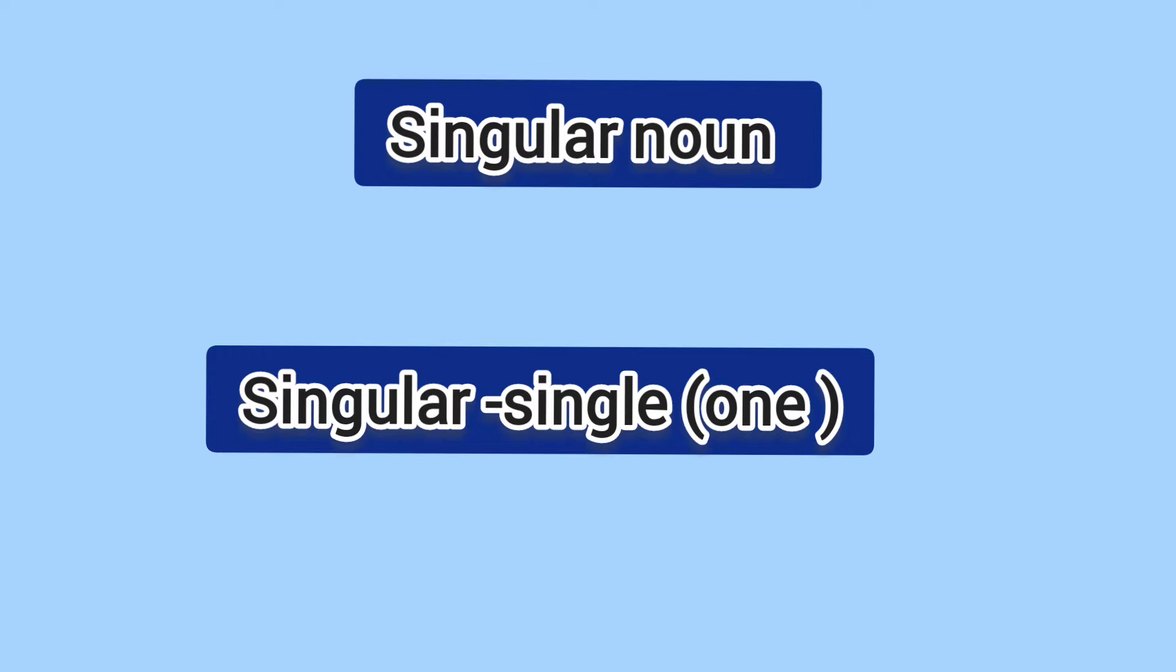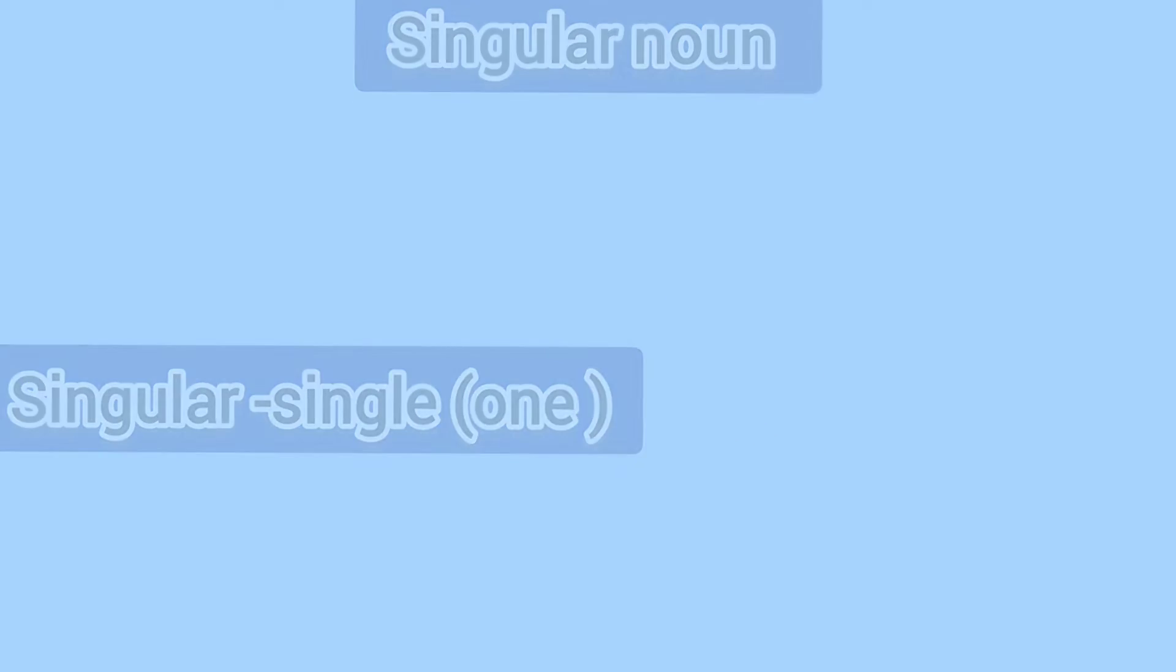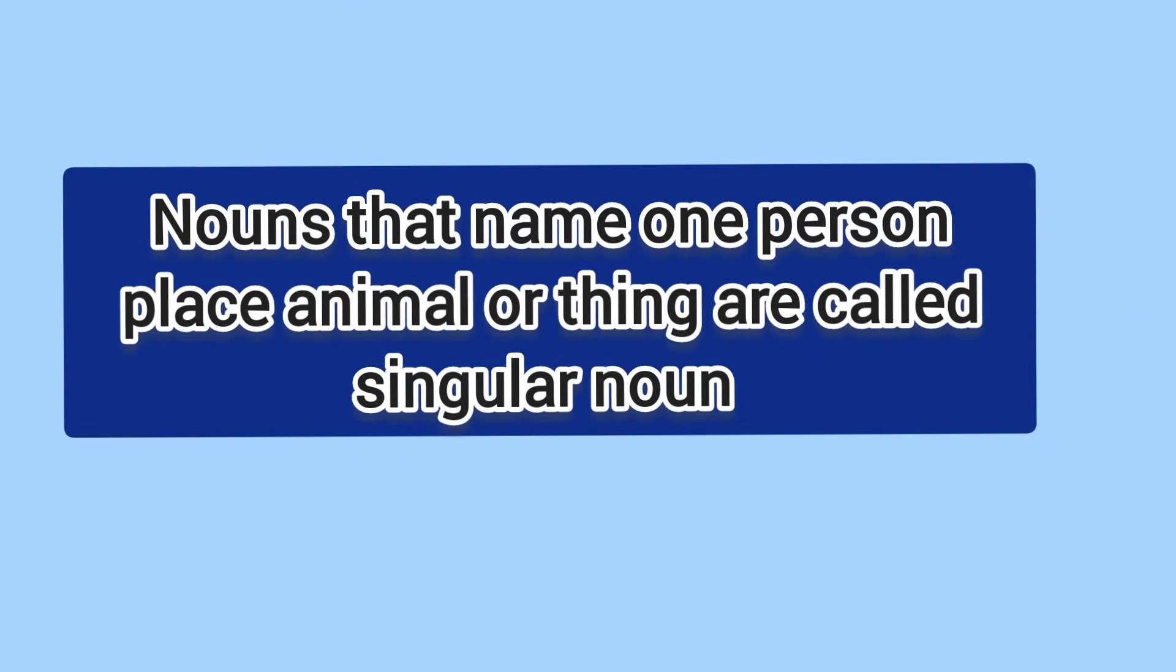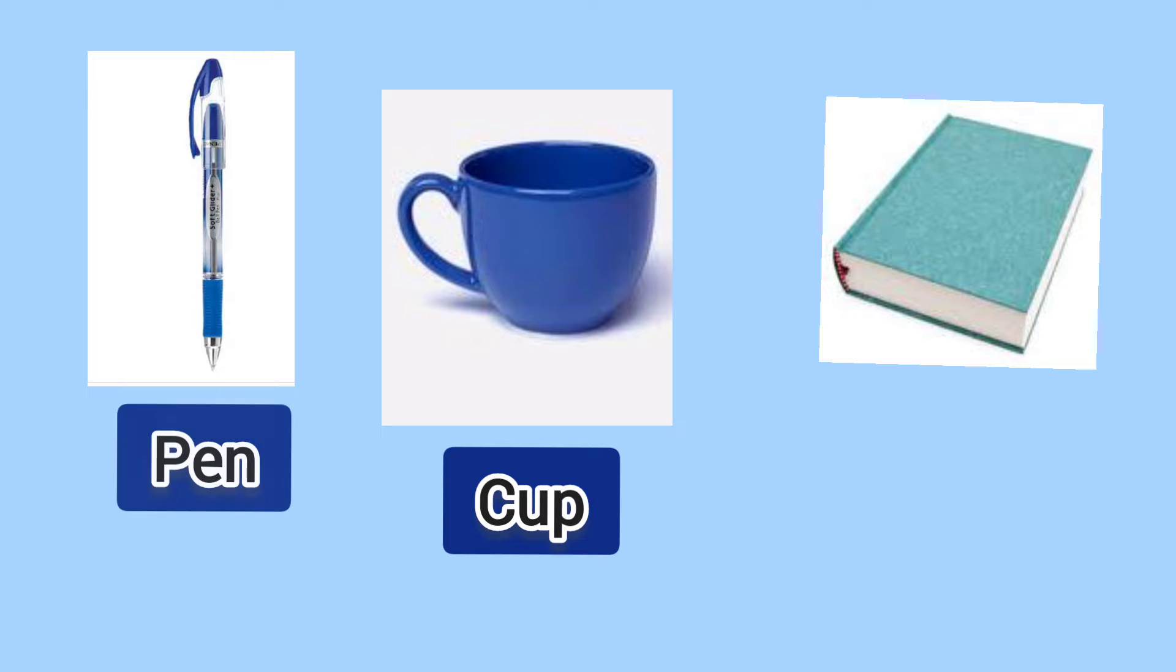Singular nouns are nouns that name one person, place, animal, or thing. For example: pen, cup, book.